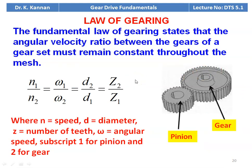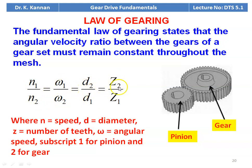The law of gearing states that the angular velocity ratio between the gears of a gear set must remain constant throughout the mesh. The speed ratio N1/N2 equals omega1/omega2 equals D2/D1 equals Z2/Z1, where N is speed, D is diameter, Z is the number of teeth, omega is the angular speed, and subscript 1 refers to the pinion and 2 to the gear.